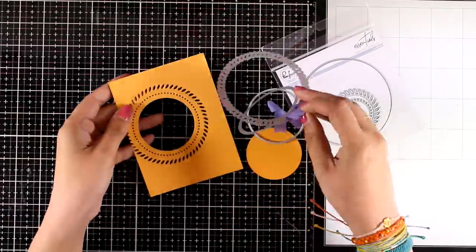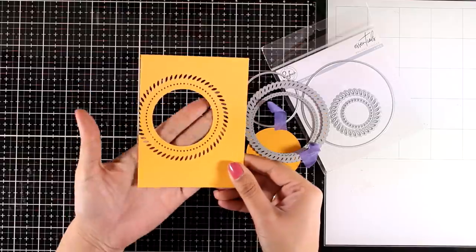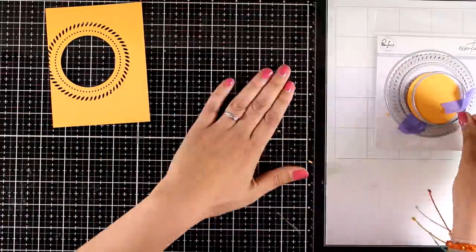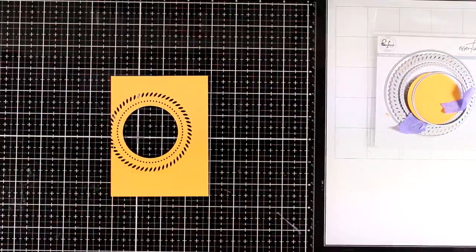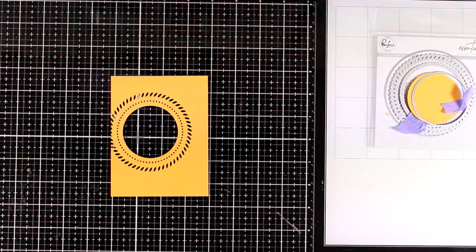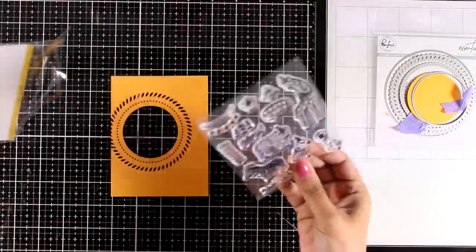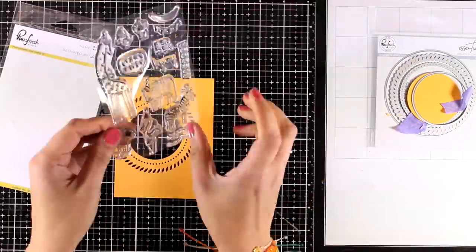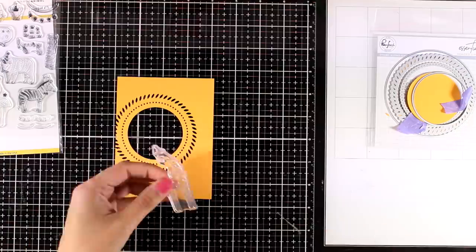You can use those to create a lovely window where you can nest inside your focal points or your sentiment. The fun part is that you get the decorative dies so you can decorate the outside edge of your circle.